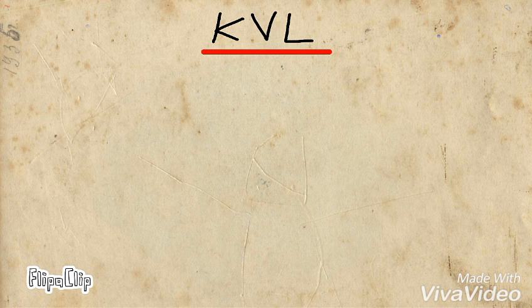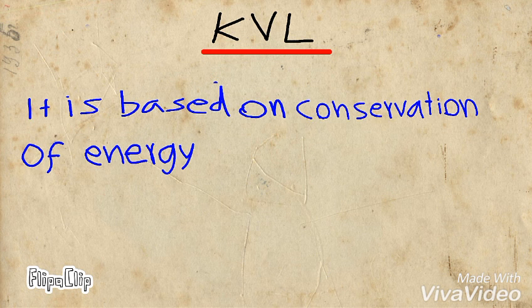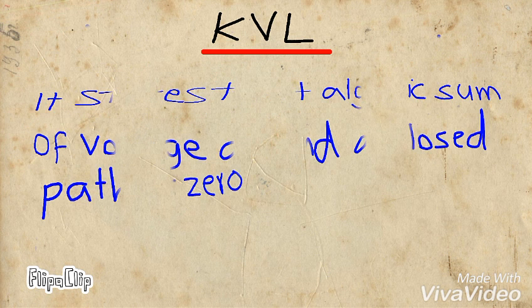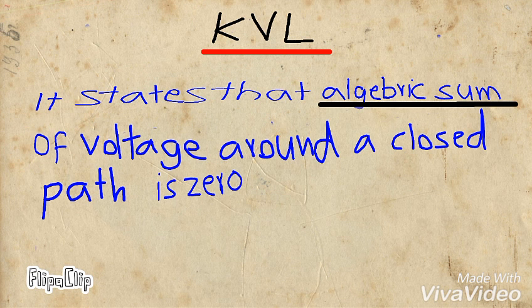Now we are going to discuss what is Kirchhoff's Voltage Law. It is based on the conservation of energy, and it states that the algebraic sum of voltages around a closed path is zero. To understand the algebraic sum meaning, you should watch the next video.